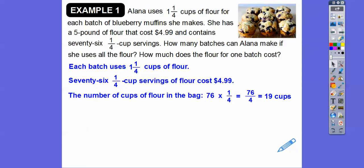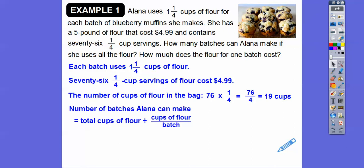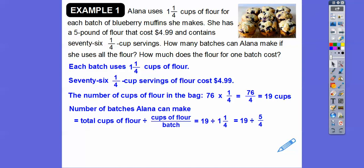Now remember, each batch uses 1 and 1/4 cups. So if we have 19 cups altogether, we're going to take the total cups — 19 — and divide by the 1 and 1/4 cups per batch. We change 1 and 1/4 to an improper fraction, then invert and multiply. Nothing cancels. I know 20 times 4 is 80, so 19 times 4 is 76 — we get 76/5 batches.